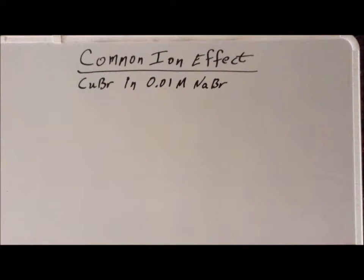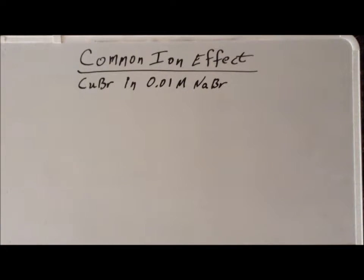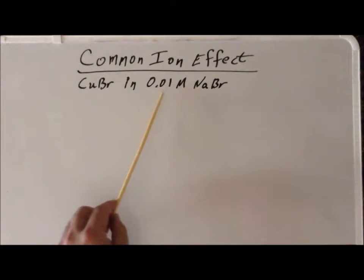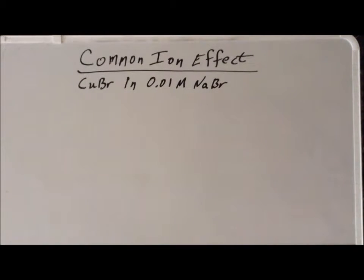Hello. In this video, we are going to do a calculation which involves the so-called common ion effect. We're going to look at the solubility of a sparingly soluble salt that we've looked at before — cuprous bromide, copper(I) bromide — but rather than dissolving this compound into pure water, we are going to dissolve it in a solution which already has a concentration of 0.01 molar sodium bromide.